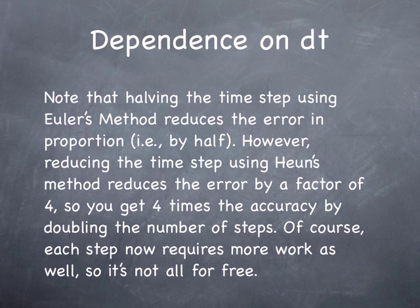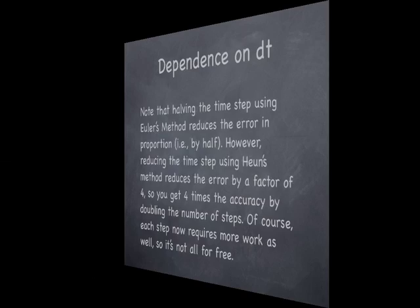Note that halving the time step using Euler's method reduces the error in proportion by half, but reducing the time step using Heun's method reduces the error by a factor of four. If you halve the time step, you get a factor of four in reduction in error. So, by doubling the number of time steps, you get four times the accuracy. Of course, it also takes more work for each time step, so it's not totally free.